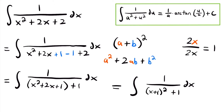Now we can factor this quadratic function into (a + b)² form, where a = x and b = 1. So this equals the integral of 1 divided by (x + 1)² + 1, times dx. Comparing the structure of this integral to the integration rule for the inverse tangent function, notice it is very similar — we have 1 divided by some function squared plus a constant squared, which matches the rule. The order of addition doesn't matter.